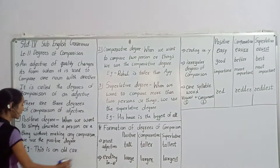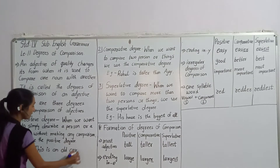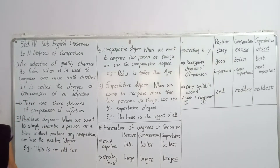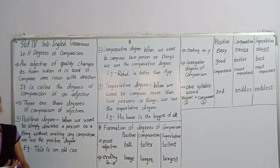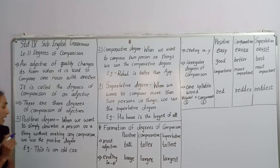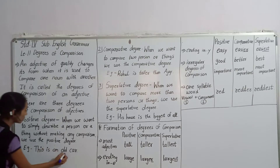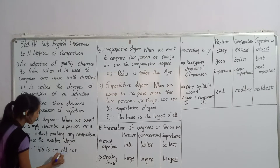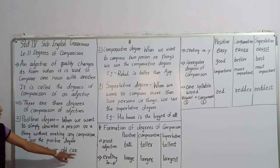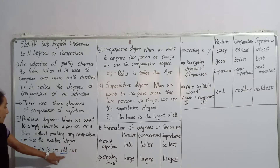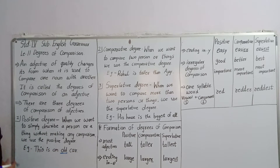Then we use the positive degree. For example: 'This is an old car.' Here we have one car described without any comparison, so here we have positive degree.